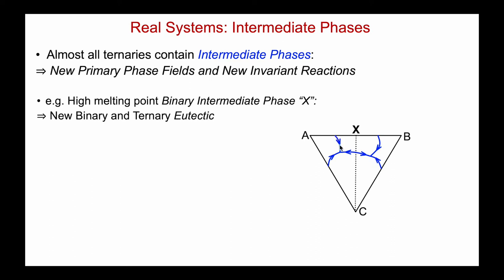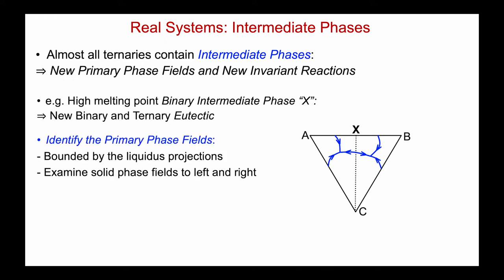Here's the resultant liquidus. Here's X, and a eutectic between A and X, and a eutectic between X and B. And those meet the eutectics coming out of the AC and BC system — the two ternary invariant reactions, which from the directions of the arrows we can tell are eutectic. For a system like this, typically what we would do is first identify the primary phase fields, bounded by these liquidus projections. We would look at the solid phase fields to the left and to the right of each liquidus valley.